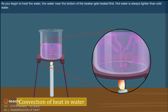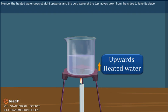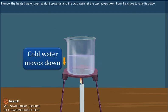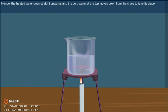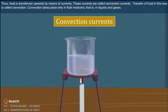As you begin to heat the water, the water near the bottom of the beaker gets heated first. Hot water is always lighter than the cold water. Hence, the heated water goes straight upwards and the cold water at the top moves down from the sides to take its place. Thus, heat is transferred upwards by means of currents. These currents are called convection currents. Transfer of heat in this way is called convection. Convection takes place only in fluid mediums, i.e. in liquids and gases.